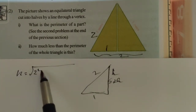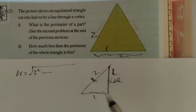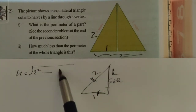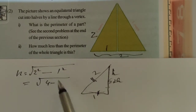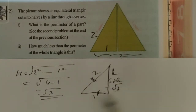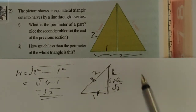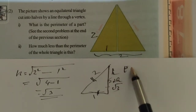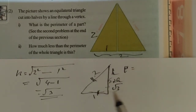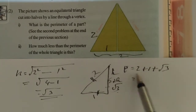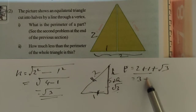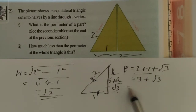h is equal to, by the Pythagorean theorem: 2 squared minus 1 squared. 2 squared is 4, minus 1 squared is 1, that is root 3. So this result is root 3.